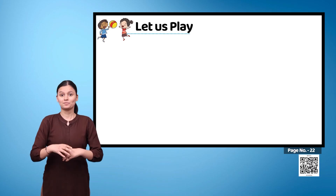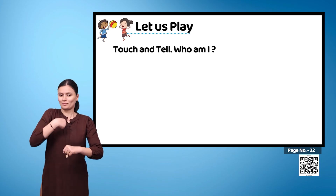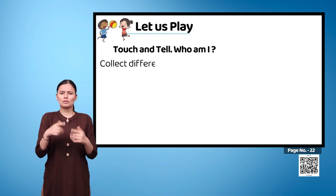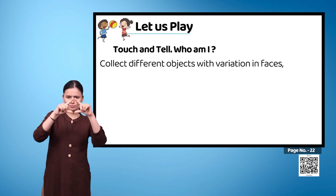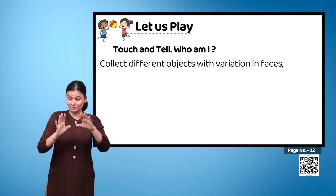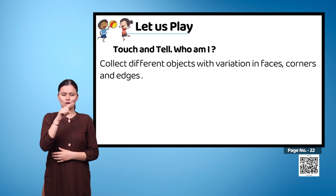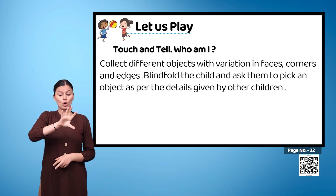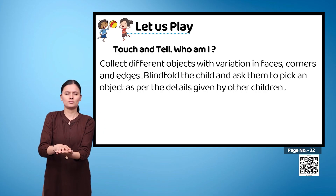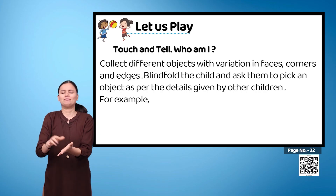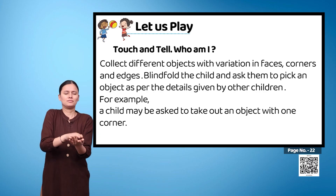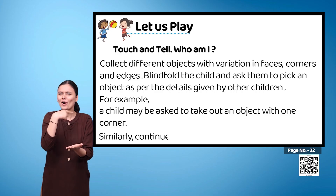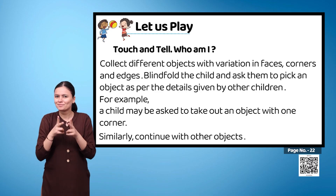Let us play: touch and tell — who am I? Collect different objects with variation in faces, corners, and edges. Blindfold the child and ask them to pick an object as per the details given by other children. For example, a child may be asked to take out an object with one corner. Similarly, continue with other objects.